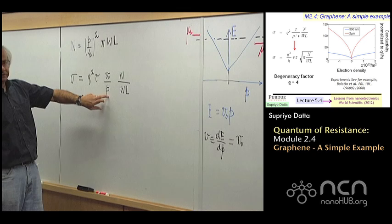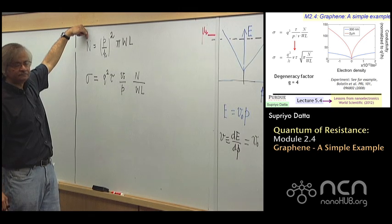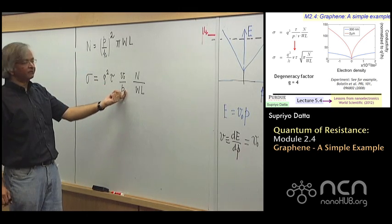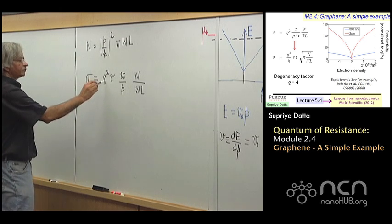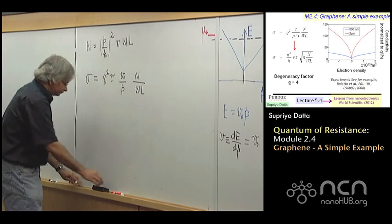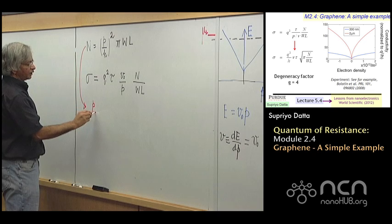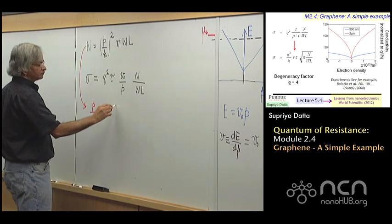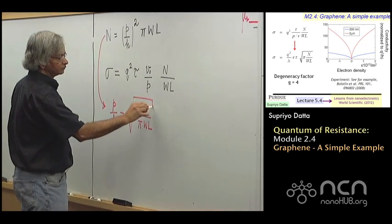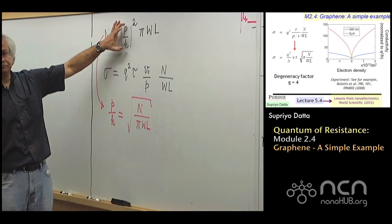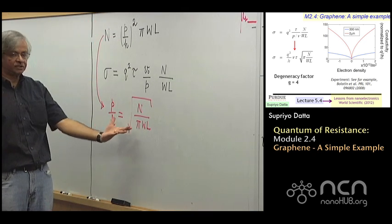Now, the expression for conductivity that we have, that we already have, looks like Q squared tau times V over P. That's what is written there as one over mass, and then N over W. Now, if the energy-momentum relation looks like this, then you can see that the velocity, which is defined as derivative of E with respect to momentum, that's just a constant, V0. And this is, of course, very different from the usual parabolic relation where velocity is proportional to momentum, is P over M, of course. But here it is a constant. So we could write here V0. That's velocity. Now the question is, what about P? Well, we could use this relation to relate P back to N.